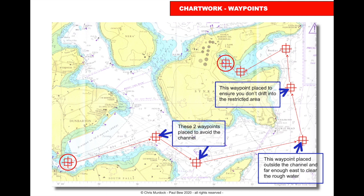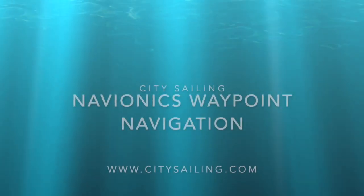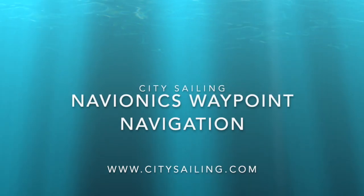The first two waypoints are plotted to avoid the main channel. The next is placed outside the channel and far enough east to clear the rough water. The following waypoint ensures you don't drift into the restricted area. Then there's a turning point, and the final one takes you into the destination. That's waypoint navigation — easy to do. Make sure you keep an alternative source of positioning.